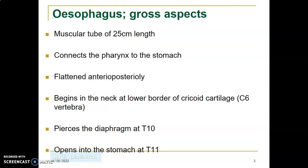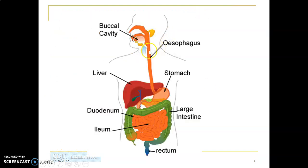The esophagus leaves the neck into the thorax, passing through the superior mediastinum, then the posterior mediastinum. It pierces the diaphragm through the esophageal hiatus at vertebral level T10 to enter the abdomen, and then terminates at T11 by opening its contents into the stomach.